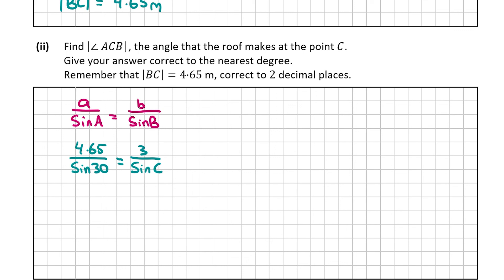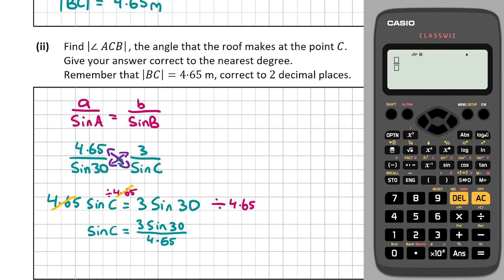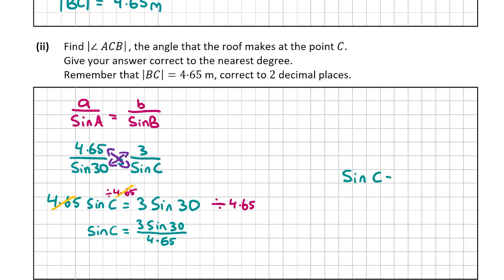Now we cross-multiply: 4.65 × sin C = 3 × sin 30. To isolate sin C, divide both sides by 4.65: the 4.65 cancels on the left, giving sin C = 3 sin 30 / 4.65. Computing this on the calculator in degrees — using the fraction function, 3 sin 30 over 4.65 — gives 10 over 31. So sin C = 10/31.